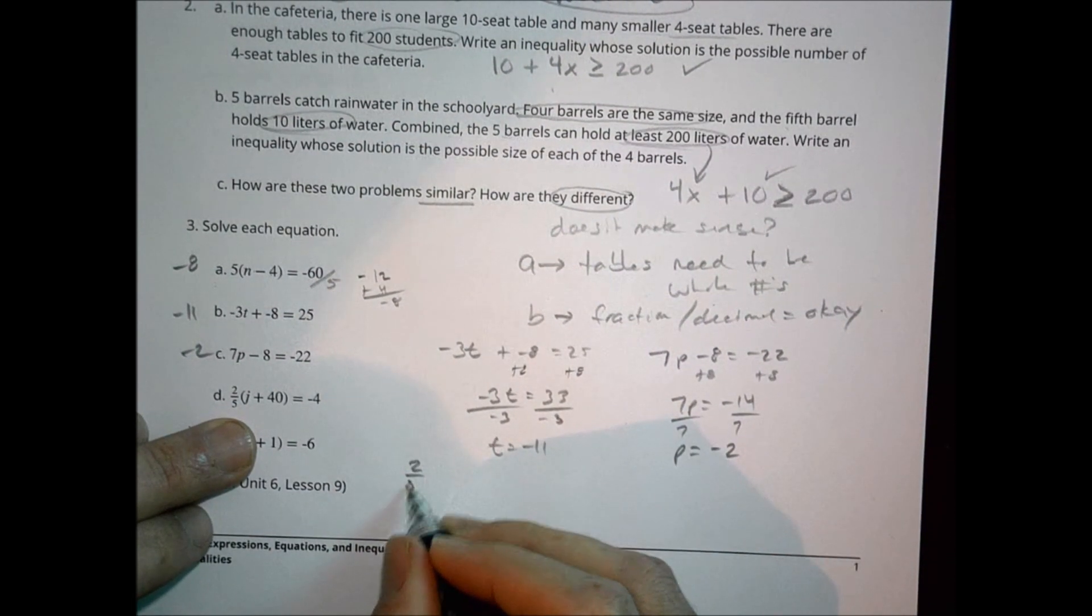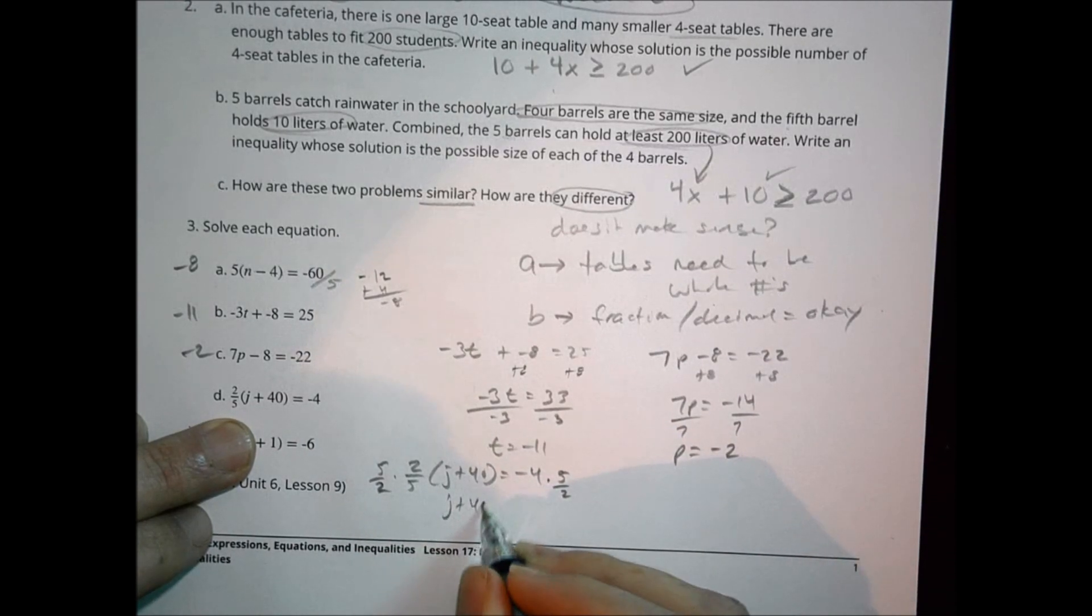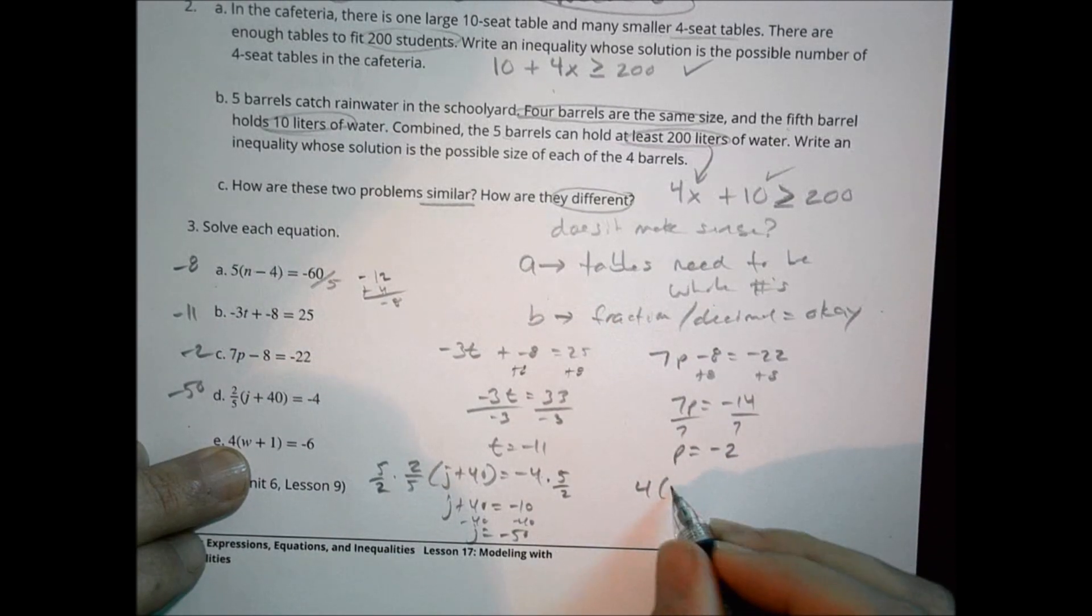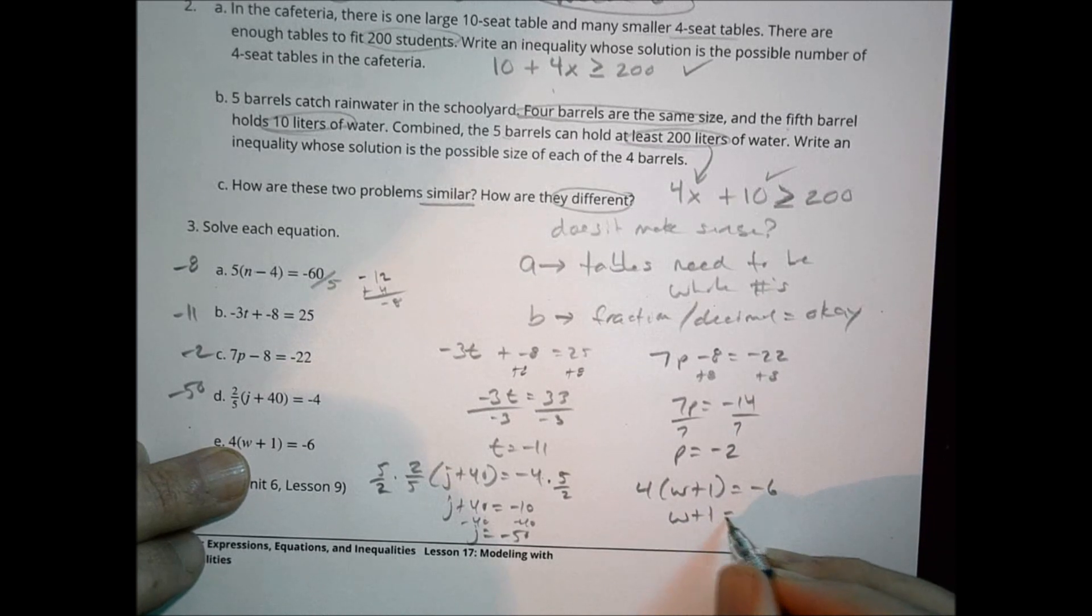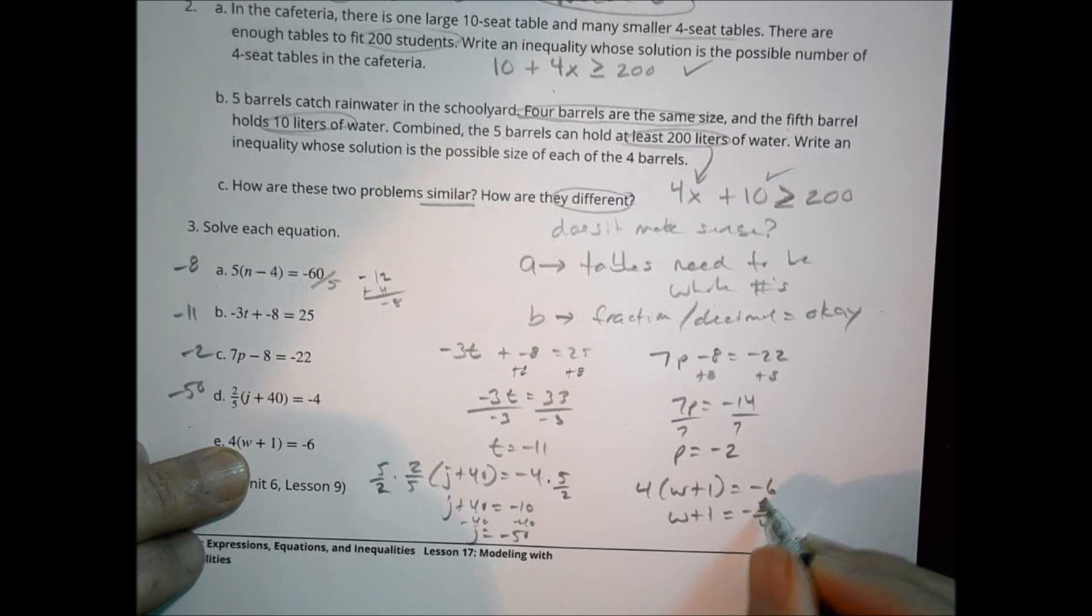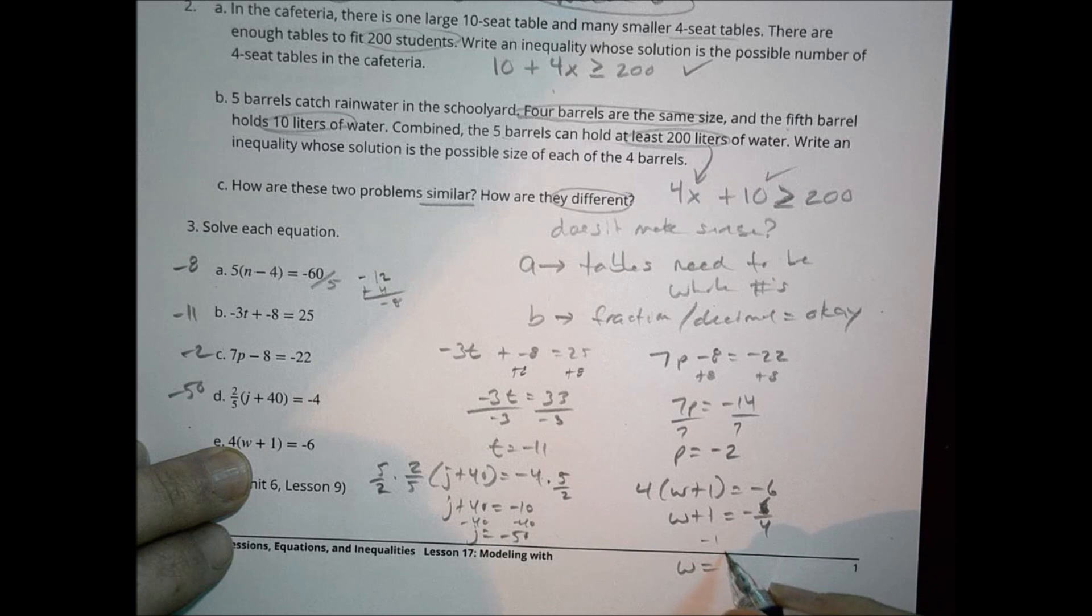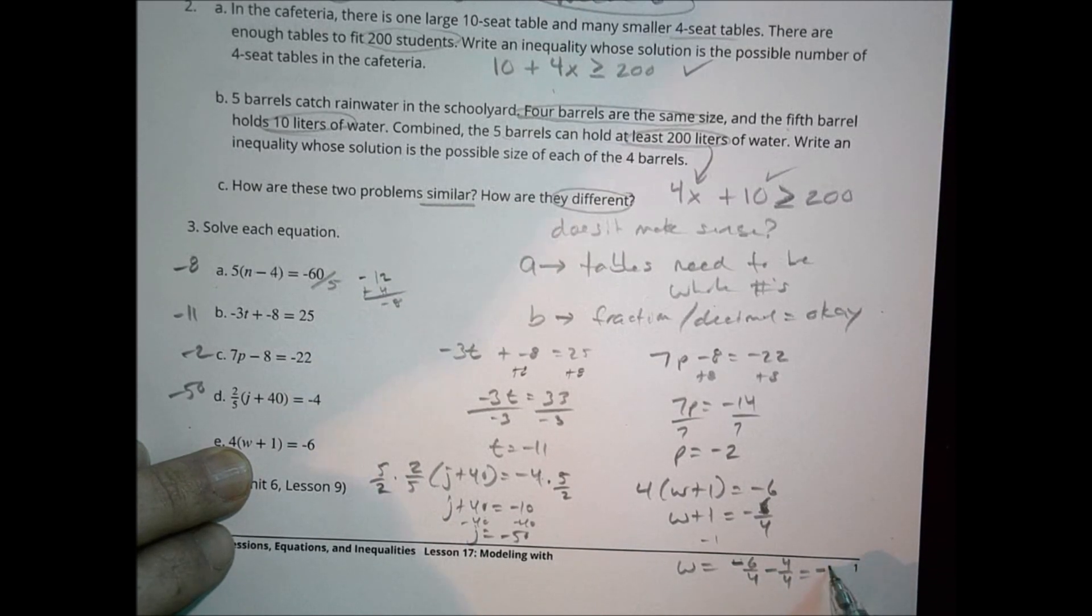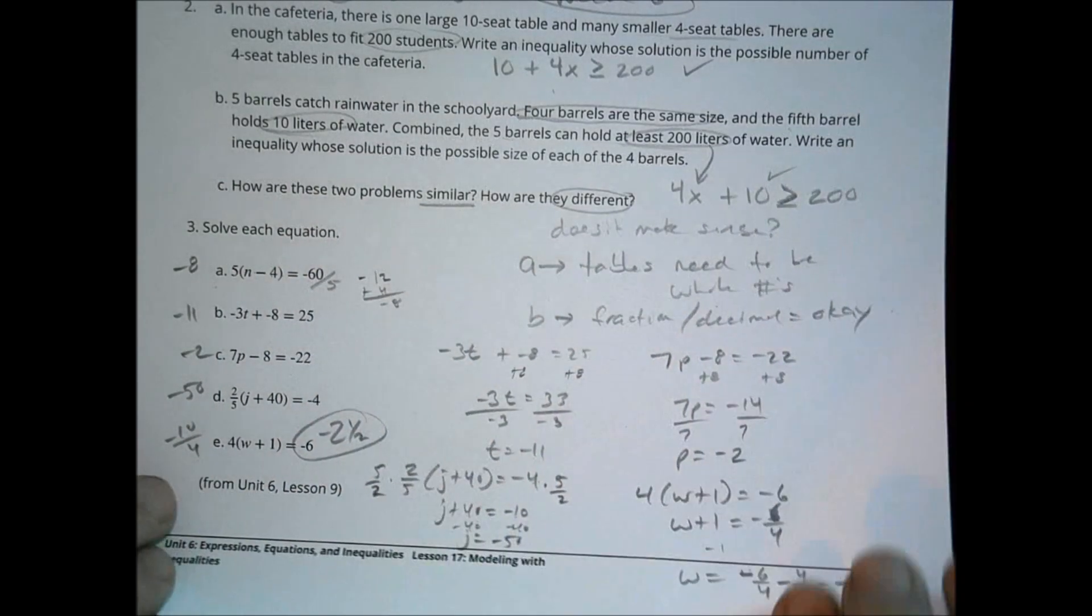For D, we have 2 fifths times J plus 40 equals negative 4. I'm going to multiply by the reciprocal, so J plus 40 equals negative 4 times 5 is negative 20 divided by 2 is negative 10. I'm going to subtract 40, so J equals negative 50. And our last one, 4 times W plus 1 equals negative 6. This becomes W plus 1 equals negative 3 over 2 or negative 6 fourths. If I subtract 1 from that, that becomes W equals negative 6 over 4 minus 4 over 4 because that's 1. And that becomes negative 10 over 4. If you want to make that as a mixed number, that would be negative 2 and a half.